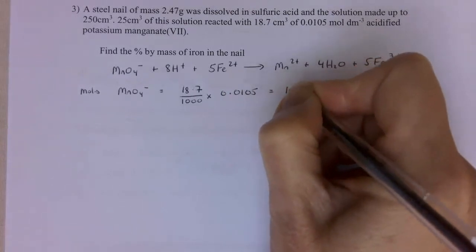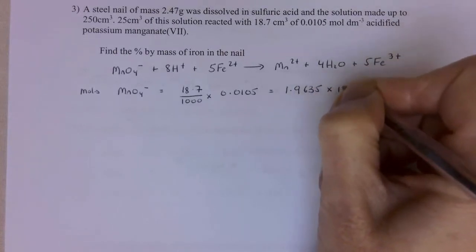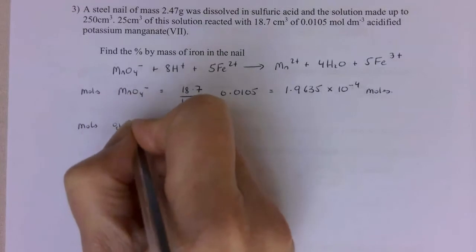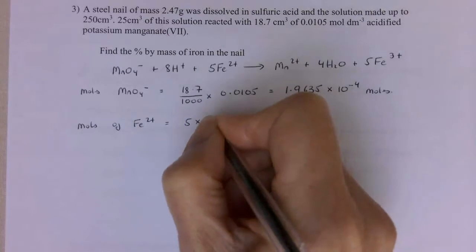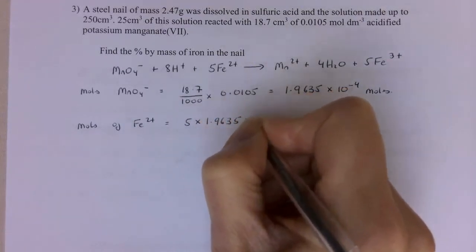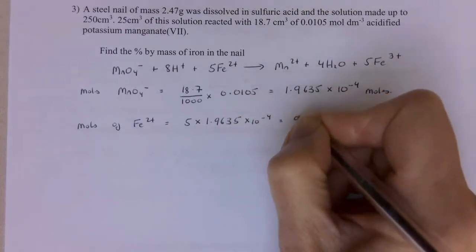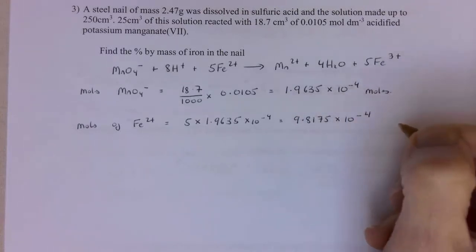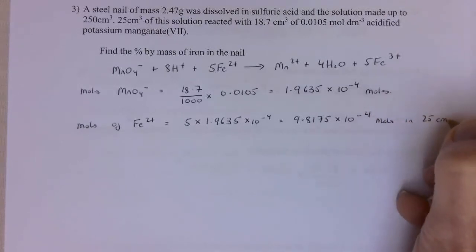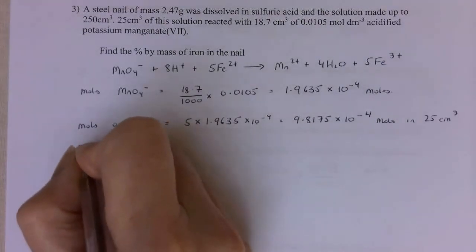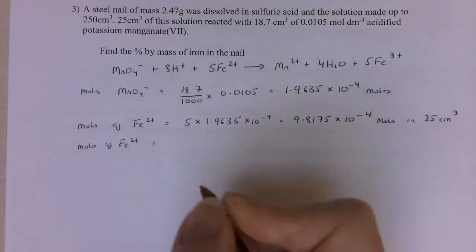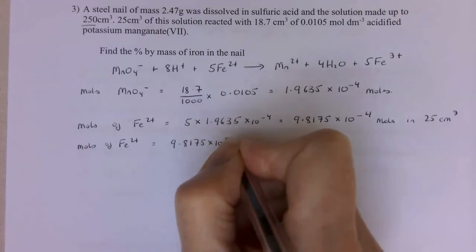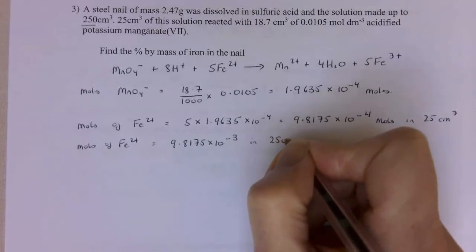You can keep these numbers in your calculator, but do write down some of them. OK, so moles of Fe2+ is going to be 5 times this number, 1.9635, times 10 to the minus 4. And that equals 9.8175, times 10 to the minus 4. That's moles. But remember, that's in 25 centimetres cubed. So moles of Fe2+ in my 250, which is what it came out of, is going to be 10 times this. So I've got 9.8175 times 10 to the minus 3 in 250 centimetres cubed.